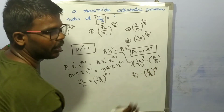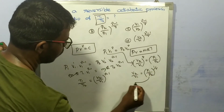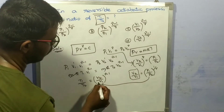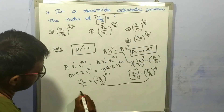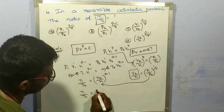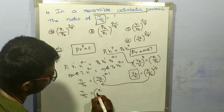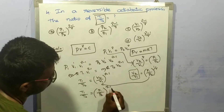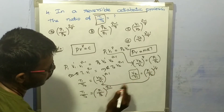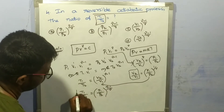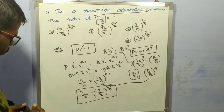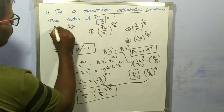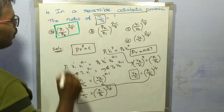Since V2/V1 = (P1/P2)^(1/γ), substituting gives T1/T2 = (P1/P2)^((γ-1)/γ). So option A is correct: T1/T2 = (P1/P2)^((γ-1)/γ).